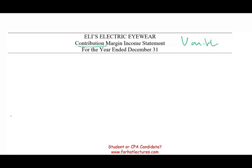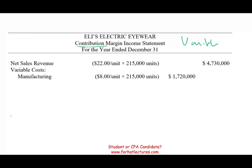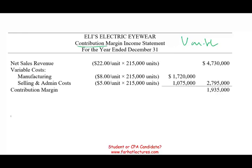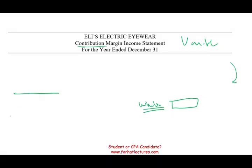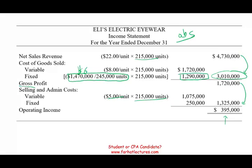Now let's look at the variable costing — or contribution margin — income statement. Sales remain the same: $4,730,000. We compute variable costs, which include variable manufacturing cost and variable selling and administrative expenses. Contribution margin — sales minus all variable costs — is $1,935,000. Then we deduct fixed costs, starting with fixed manufacturing overhead. Remember, the entire $1,470,000 is expensed here.